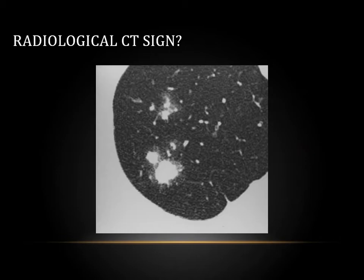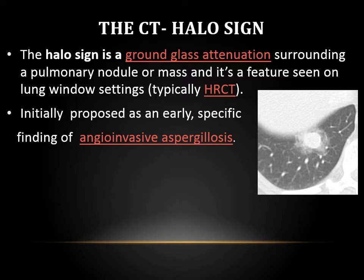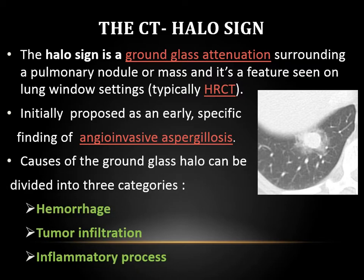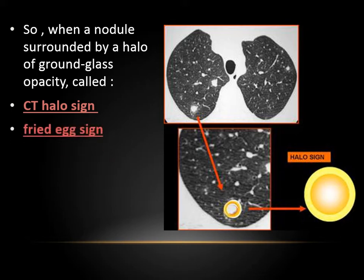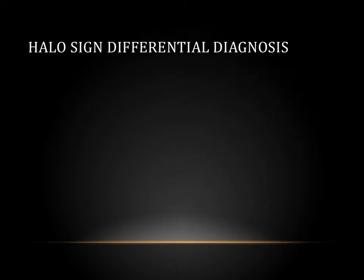Does anyone have an idea about what radiological sign this is? It's called the CT halo sign. The CT halo sign means there is ground glass attenuation around any pulmonary nodule or mass. It is a feature seen on a lung window setting, especially in high resolution CT scan. When this sign was first proposed, it was said to be specific for invasive aspergillosis. It is also called the fried egg sign.